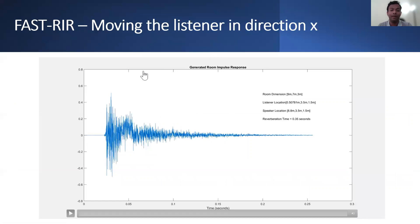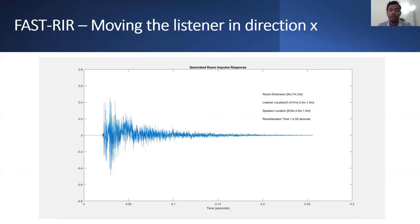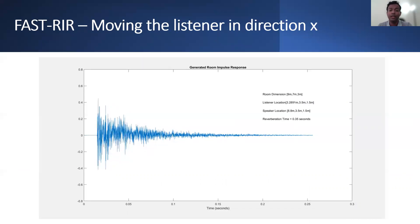In this example, we keep two dimensions of the listener position, three dimensions of the speaker position, three dimensions of the room, and the reverberation time constant. We change the listener position in the x direction. We can see that when the listener approaches the speaker, the delay of the direct response is reduced over time.